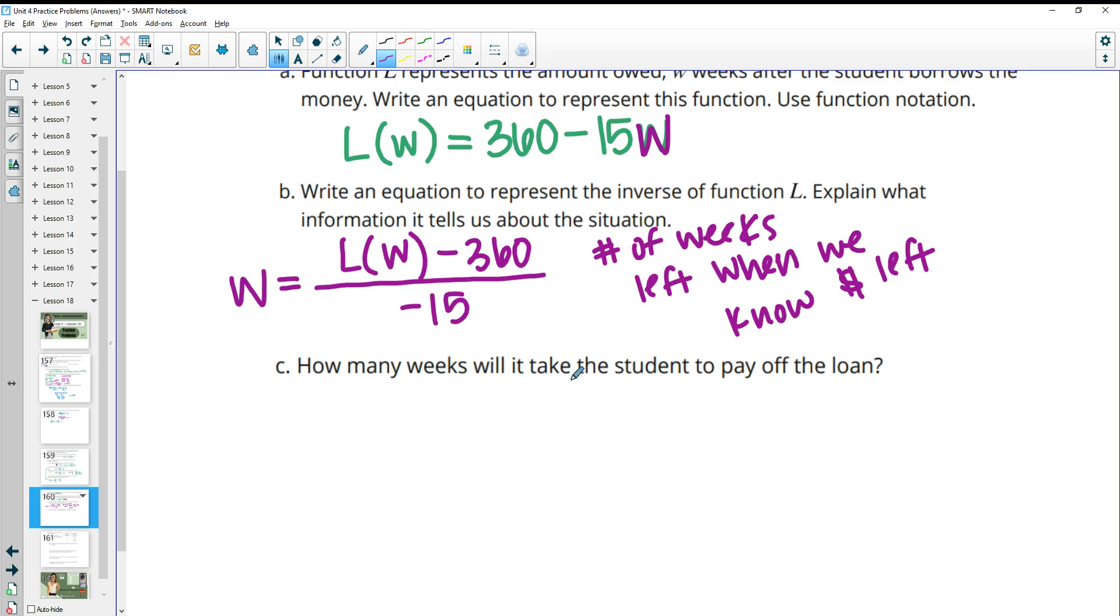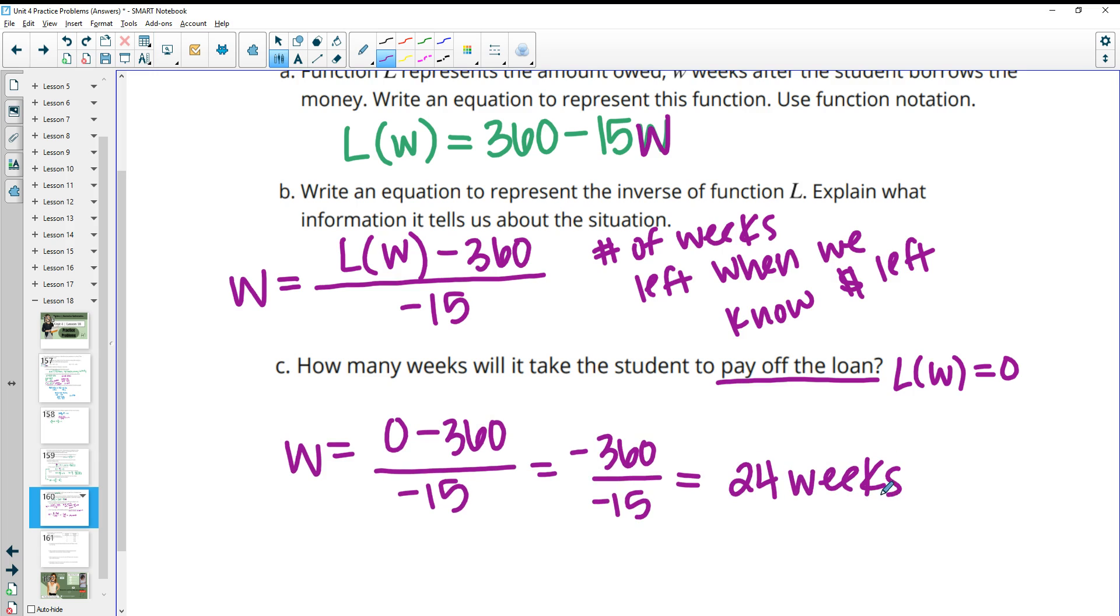So then this wants to know how many weeks do we have left when the student pays off the loan. And this means when the loan itself equals zero, once we've paid it all off. So then we would say in here we have $0 left to pay off, minus 360, divided by negative 15. So then this is going to be negative 360 divided by negative 15. And that will tell us 24 weeks. So 24 weeks to pay off that debt.